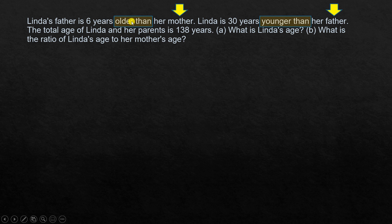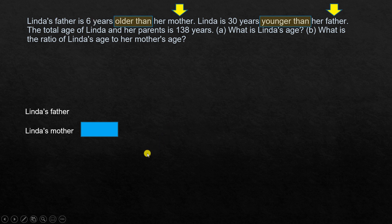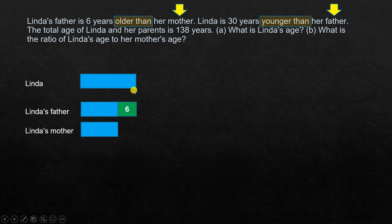Let's draw a model for the first statement: Linda's father is six years older than her mother. We draw one box for Linda's mother, and Linda's father will be whatever Linda's mother's age is plus six — we add six here to represent that. Now for the second statement, Linda is 30 years younger than her father, so this represents Linda's father's age.